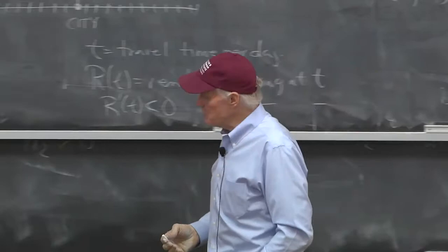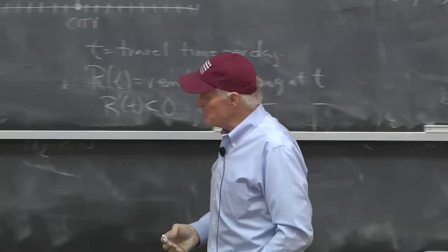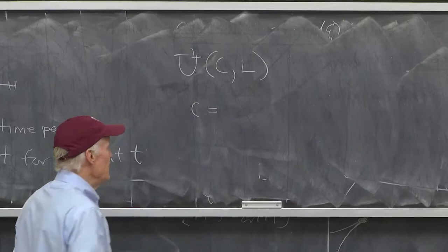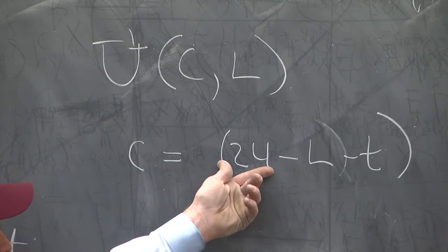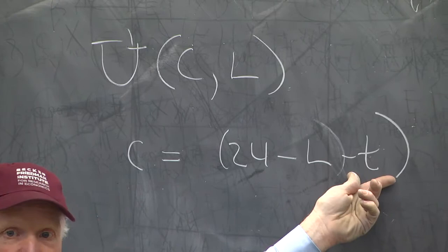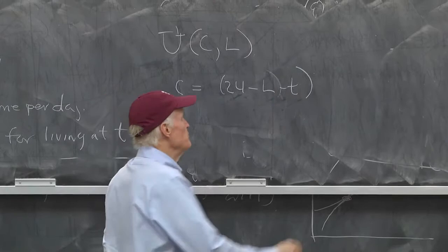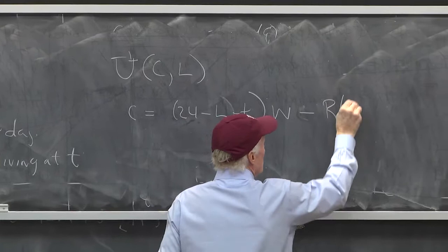So I'm going to think about this person's budget constraint as being C equals 24 minus L minus T. So this is how many hours I have in a day. That's how much leisure I take. That's how much travel time I have. So that's how many hours I get to work.